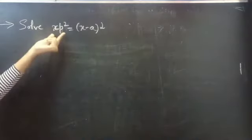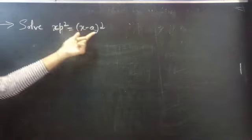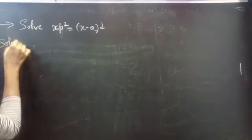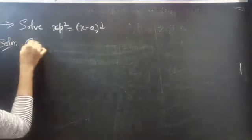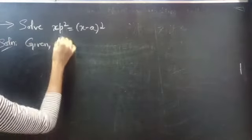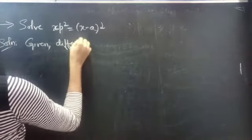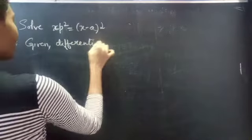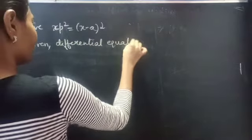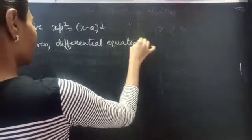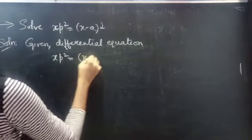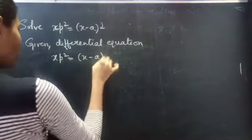Problem to solve: xp² equals (x minus a) whole squared. Given differential equation: xp² equals (x minus a) whole squared.